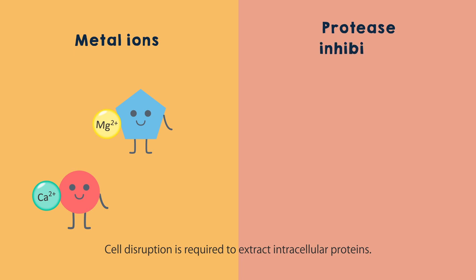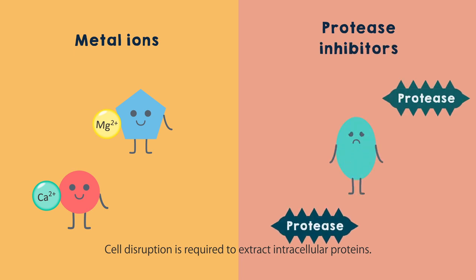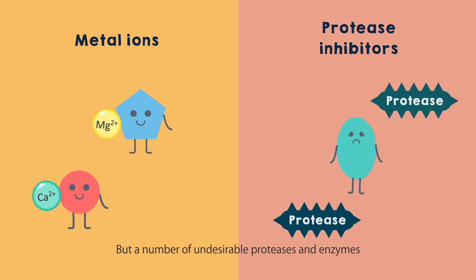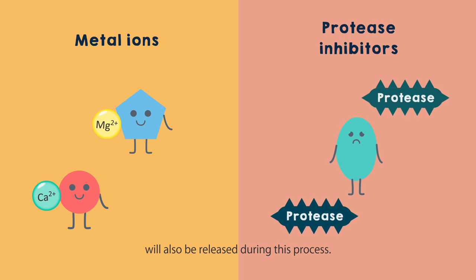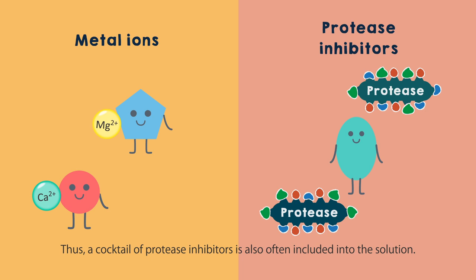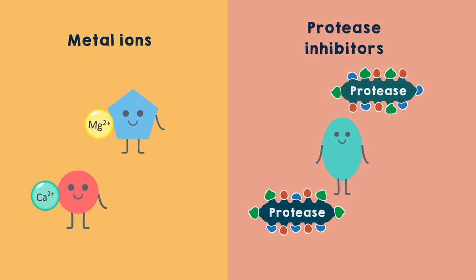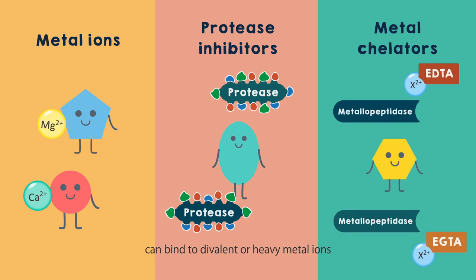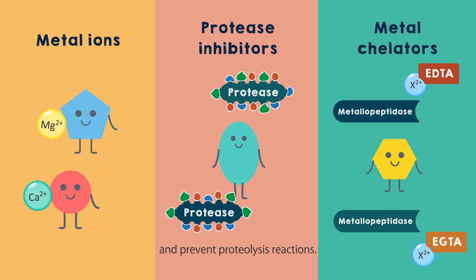Cell disruption is required to extract intracellular proteins, but a number of undesirable proteases and enzymes will also be released during this process. Thus, a cocktail of protease inhibitors is also often included in the solution. Metal chelators like EDTA or EGTA can bind to divalent or heavy metal ions to inhibit a range of metallopeptidases and prevent proteolysis reactions.